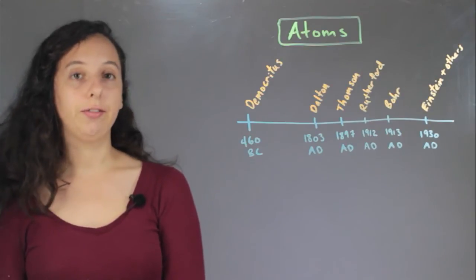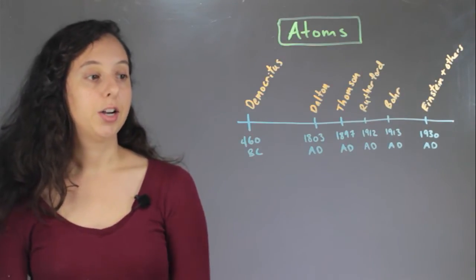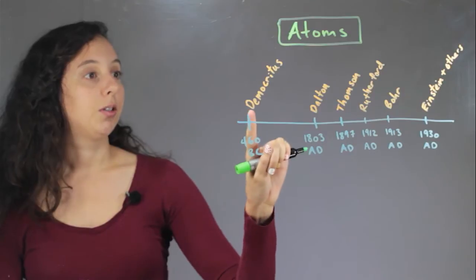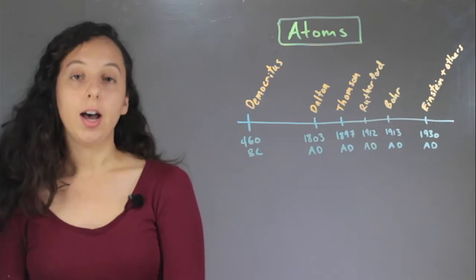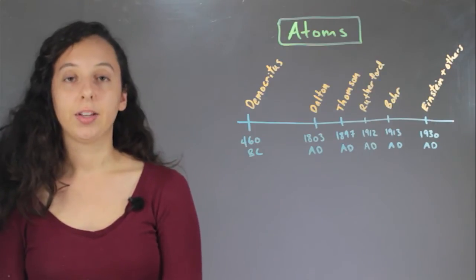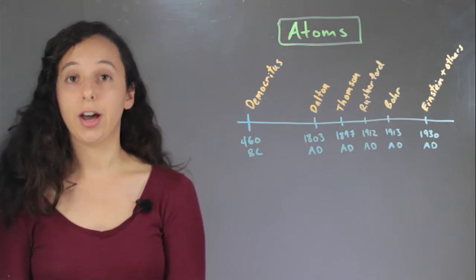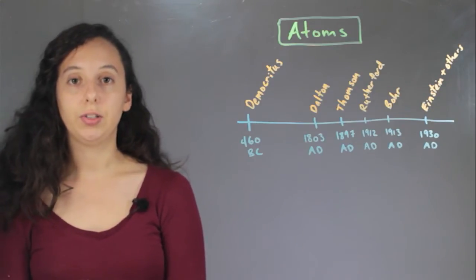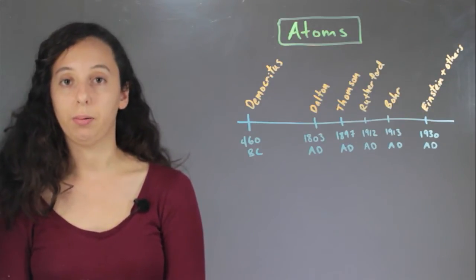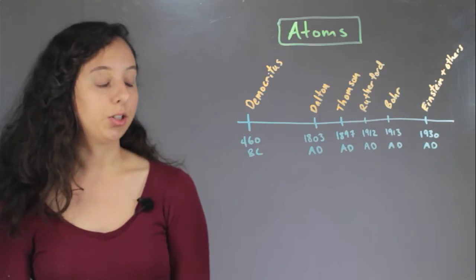And they were first conceptualized by a Greek philosopher, Democritus, and so he philosophized that if you cut a substance in half, and then you cut that in half, and you cut that in half, and you kept on going, that eventually you would be stuck with one particle that wouldn't break in half. And so he actually called them atoms.